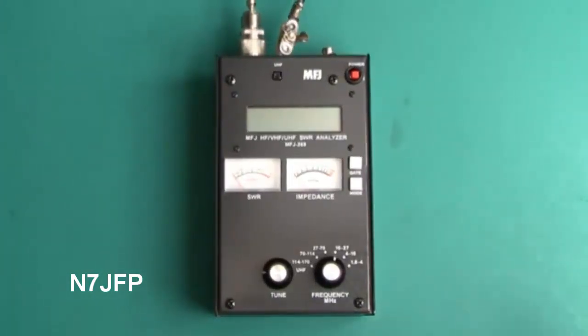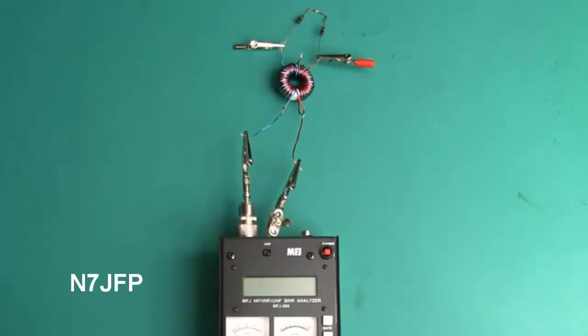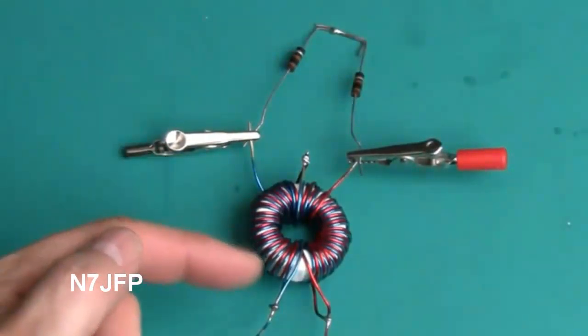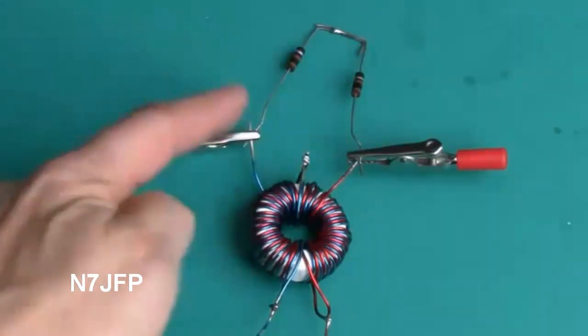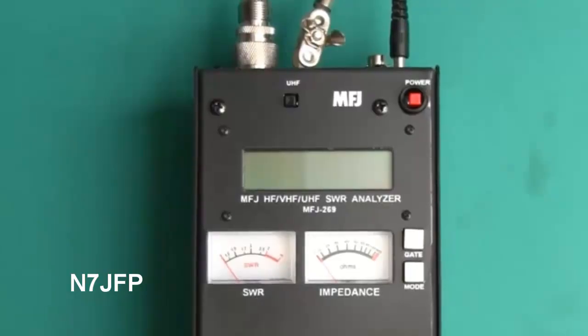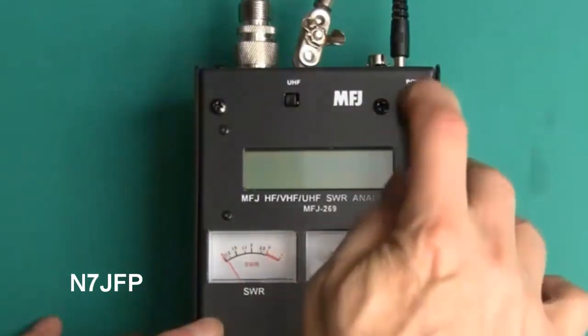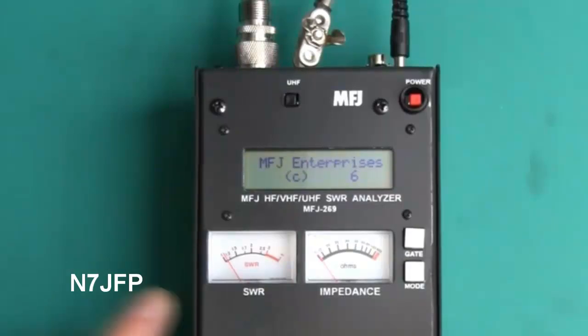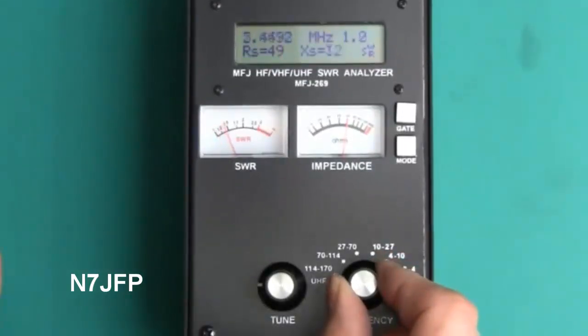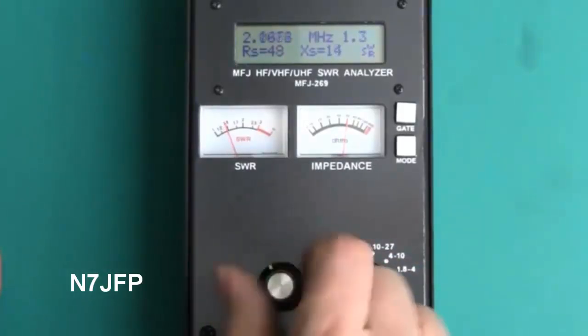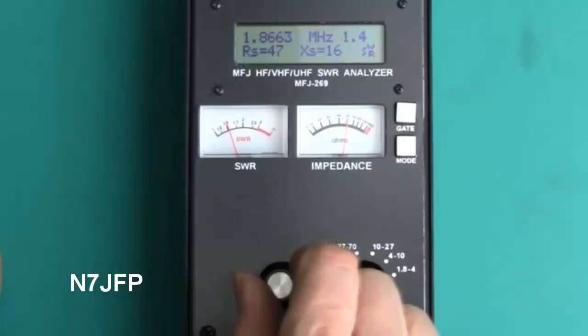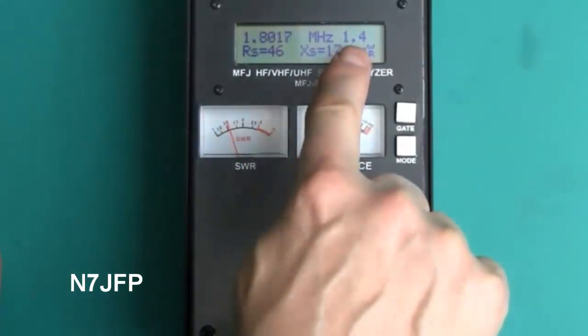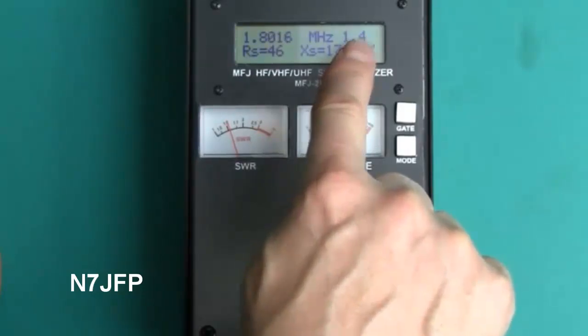Here we're going to test for SWR of the one to four balun. We've got the MFJ 269, here we have the balun, a one to four 200 ohm load. Okay, first let's put some power on here. So we'll start with the 160 meter band, 1.8, it says it's 1.4 SWR. That's pretty good.